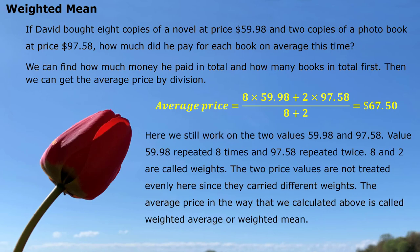Here we still work on these two values — $59.98 and $97.58. Value $59.98 repeated eight times and $97.58 repeated twice. The two price values are not treated evenly here since they carry different weights. The average price calculated in this way is called weighted average or weighted mean.